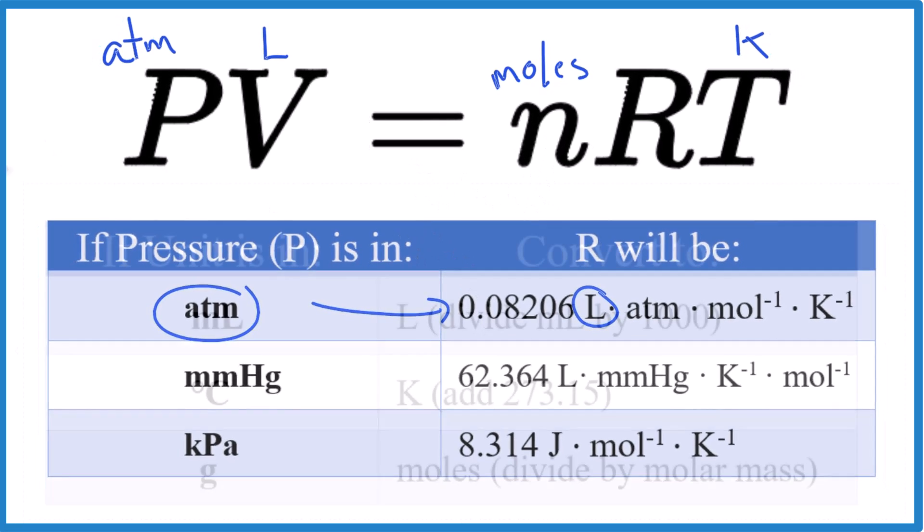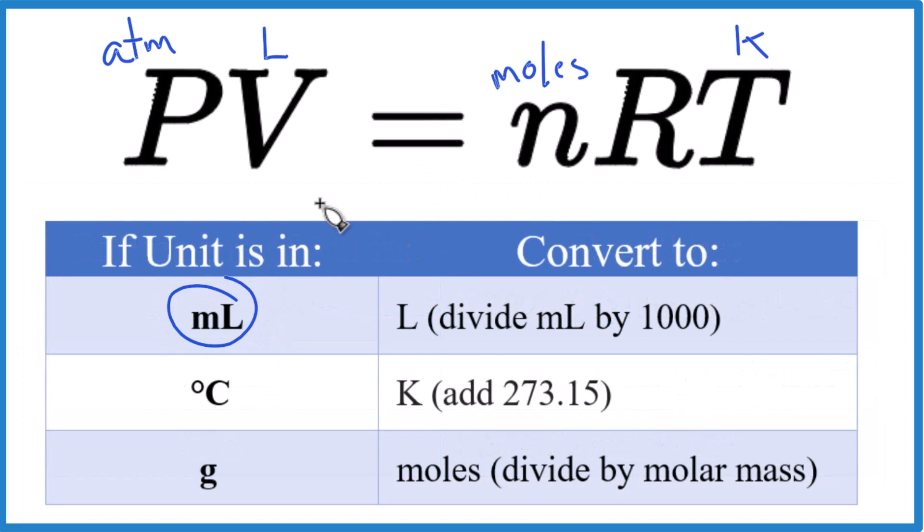So take a look at this. Typically, teachers will give you milliliters, and you know we have to have liters. So you need to change milliliters to liters. You just divide your milliliters by 1,000. And very often, they'll give you degrees Celsius, and you have to change that to Kelvin. Just add Celsius plus 273.15, you have Kelvin.